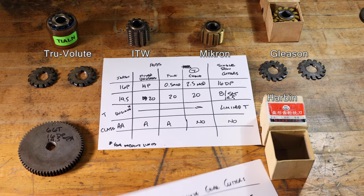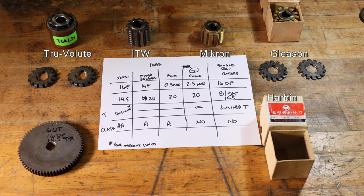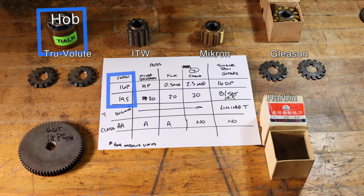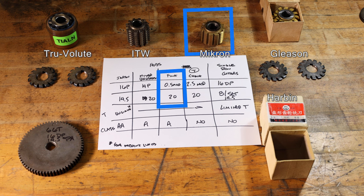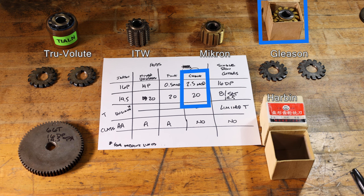Let's look at these hobs again. Suppliers include True Involute, Japanese ITW, Micron, Gleason, Harbin, and import. The reason to highlight these hobs is to show that some are pitch 20, some are pitch 14 and a half, and some are module 20 — the module ones are all 20 degrees.